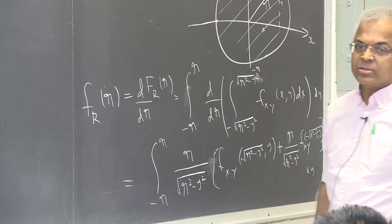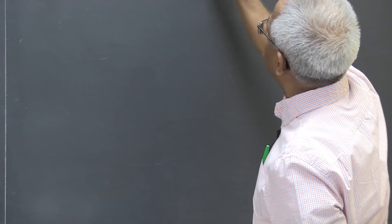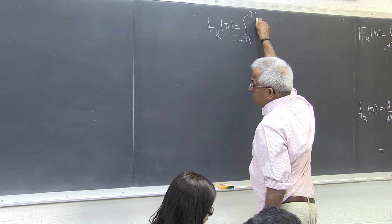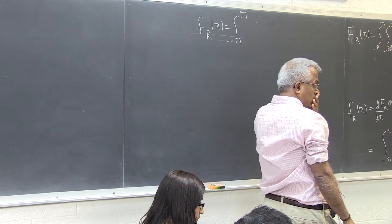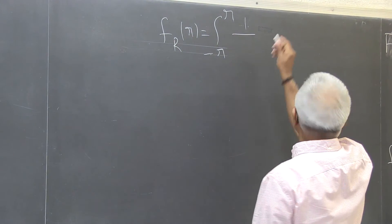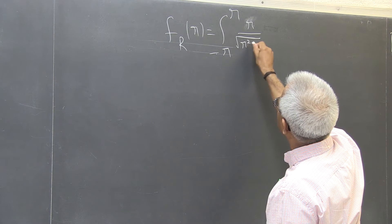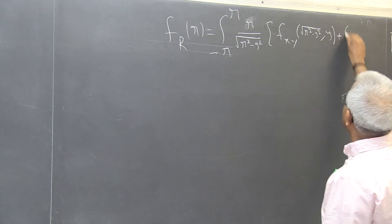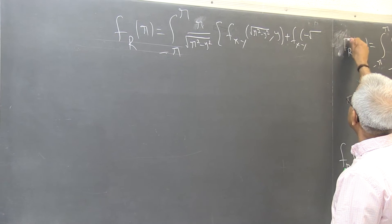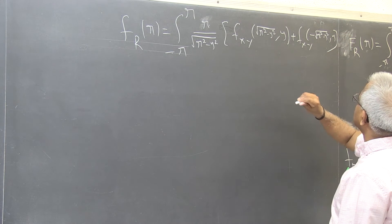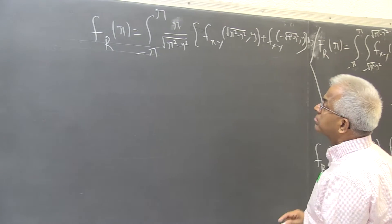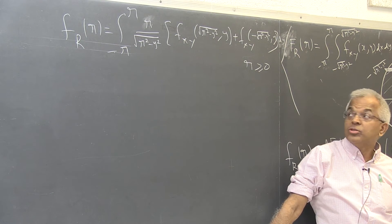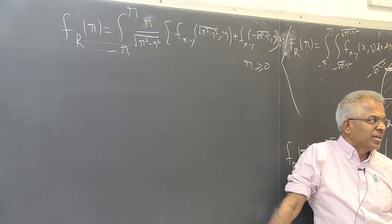So the general form of the PDF is f_r(r) = integral from −r to r of [r/√(r²−y²)] · f_{x,y}(x,y) evaluated at the boundary, dy, for r > 0 and 0 otherwise. This is as far as we can go with the general form. Now we substitute the given joint density function.